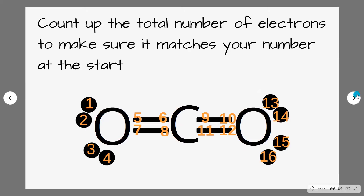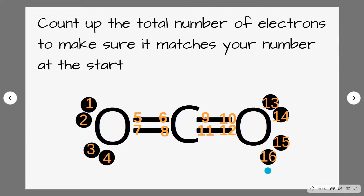The final thing you need to check is that your total number of valence electrons matches the number you counted up at the start. We worked out that there were 16 valence electrons in carbon dioxide, and when we count the electrons in our Lewis diagram we also have 16. So our Lewis diagram for carbon dioxide is correct.